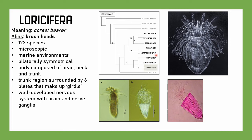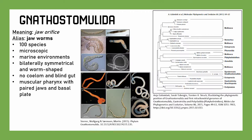We have Gnathostomulida, which means 'jaw orifice.' These are known as jaw worms. About 100 species, microscopic, bilaterally symmetrical, and worm-shaped, found in marine environments. They have no coelom and a blind gut — food goes in the mouth and back out the same way. They have a muscular pharynx with a paired jaw and basal plate, which is where we get the 'jaw' from. One recent paper places them around the Syndermata, more closely related to the Gnathifera.